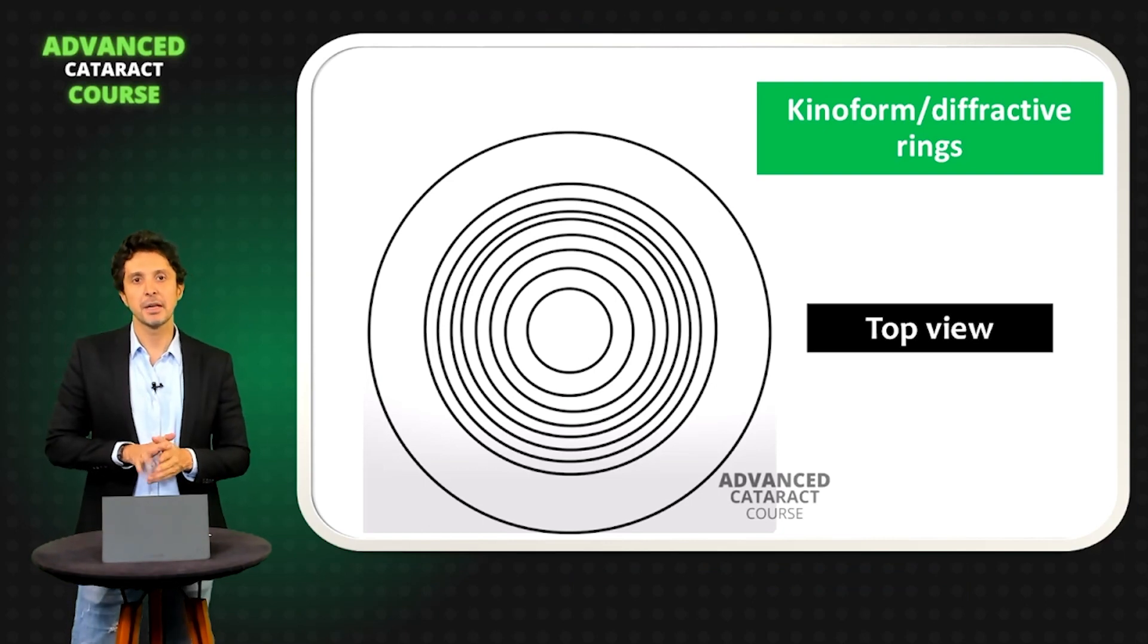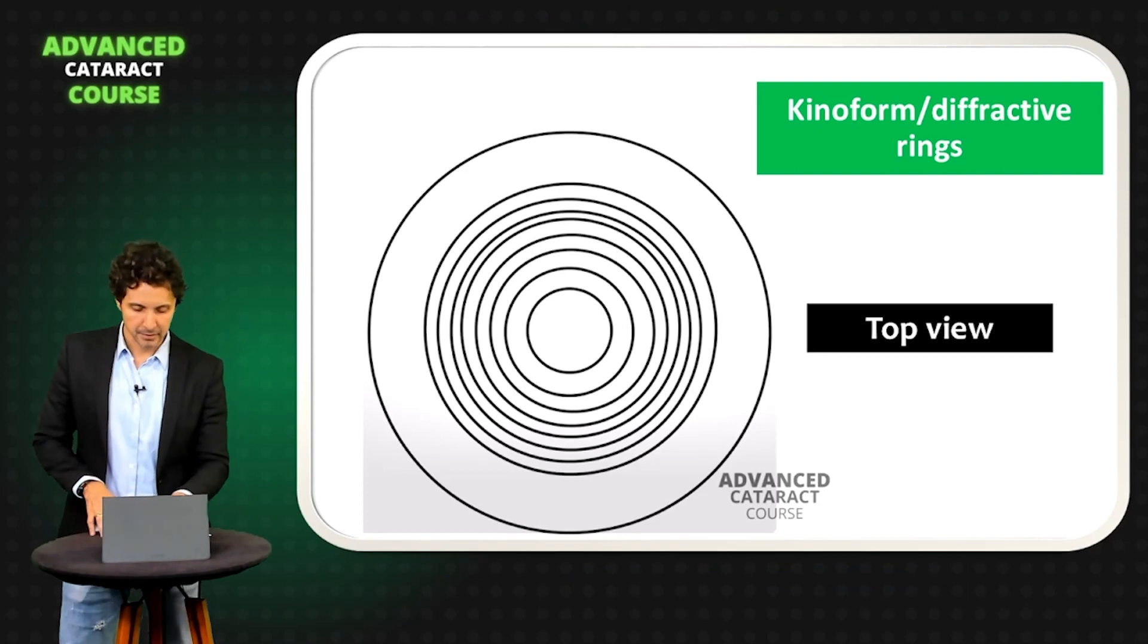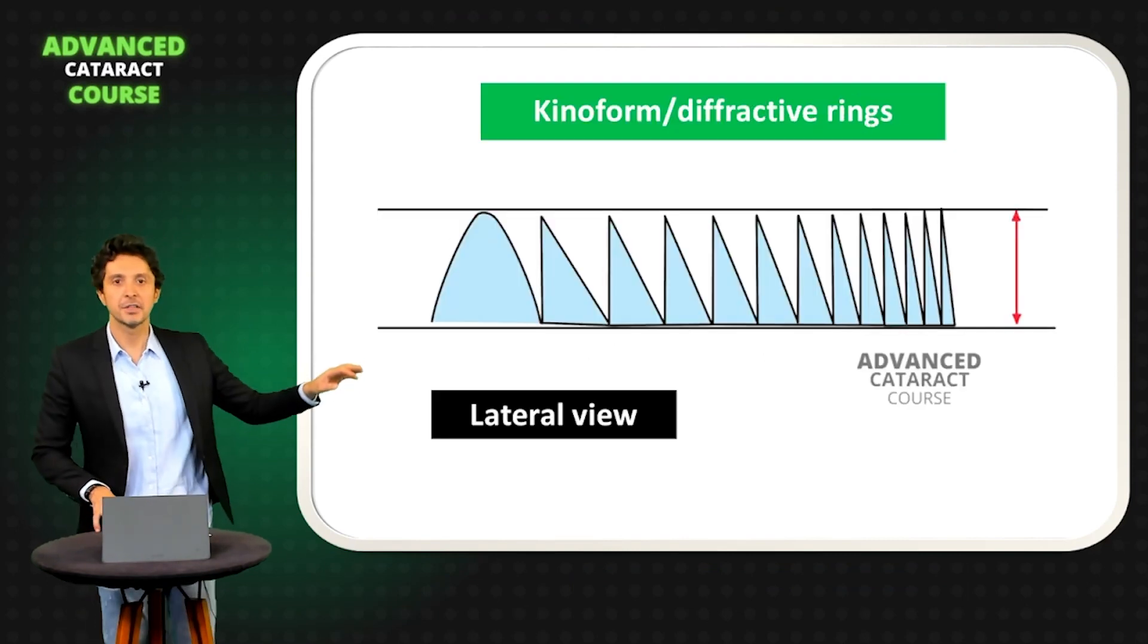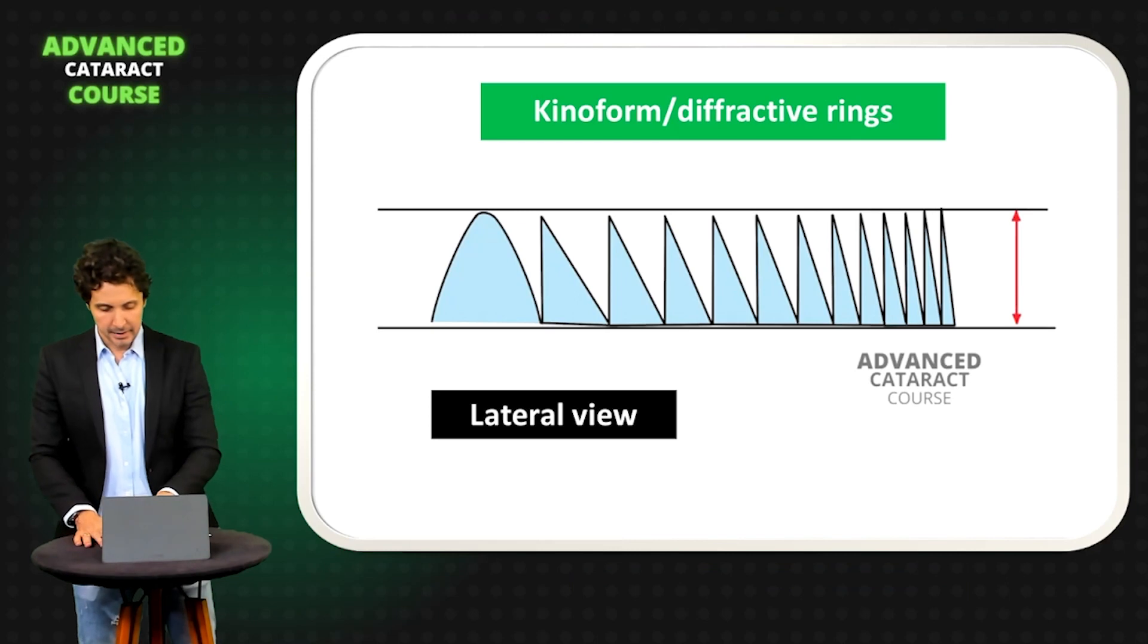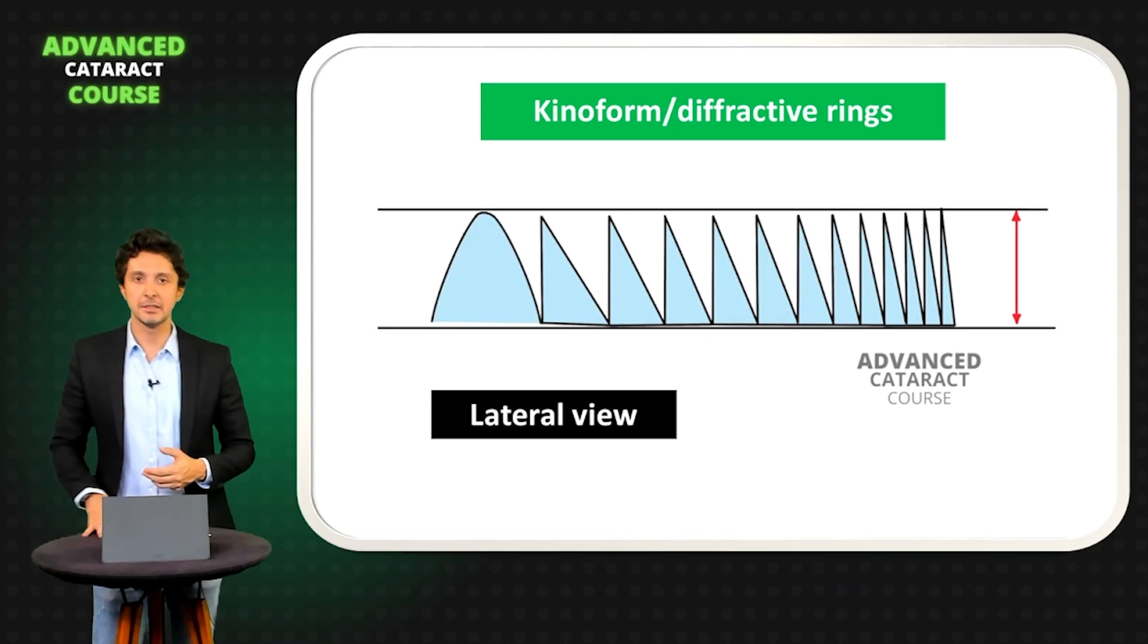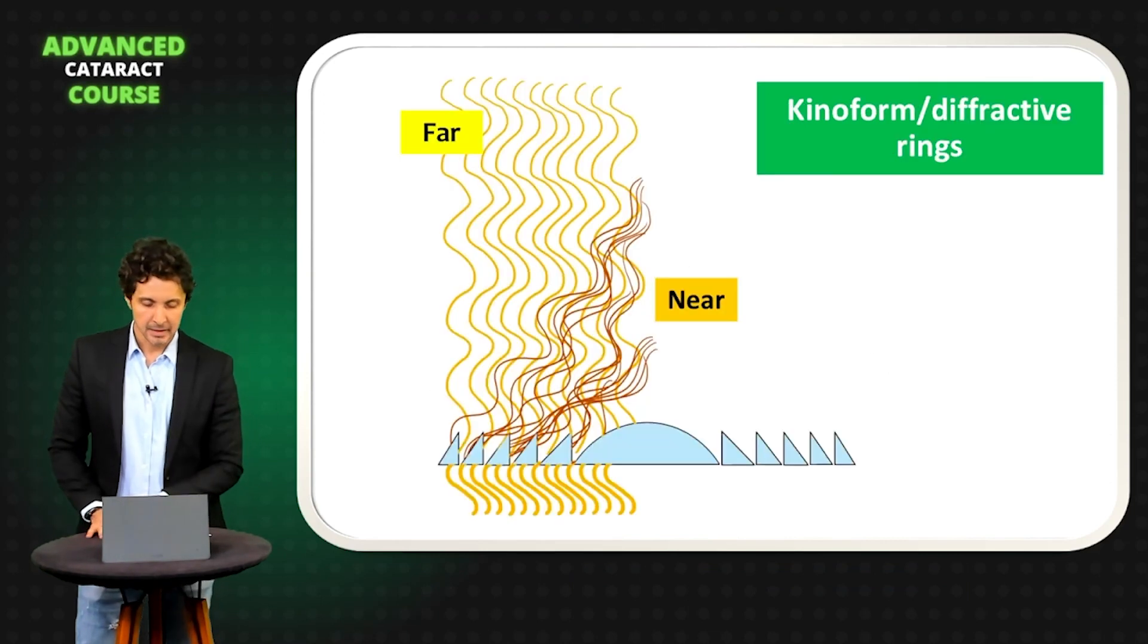The other name that you can use is the kinoform. Here's the lateral view of the kinoform. In this point is the far part, and here you have the kinoform that produces the multifocality for you.